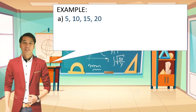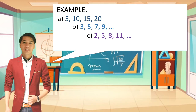Halimbawa: 5, 10, 15, 20; then 3, 5, 7, 9; then 2, 5, 8, 11; and 5, 7, 9, 11. So yan yung mga halimbawa ng sequence.